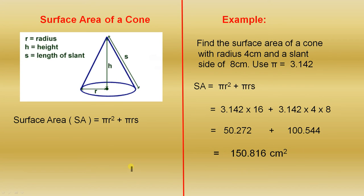The surface area of a cone. The surface area of a cone is pi r squared plus pi r s. Pi r squared is the area of the base, which is a circle, and pi r s is the area of the curved section starting from the bottom all the way to the top. When you add those two together, that's the total surface area of the cone.